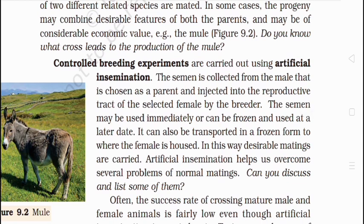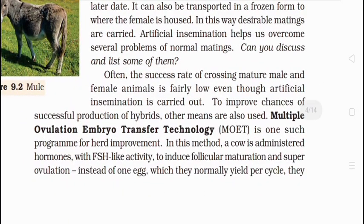Artificial insemination involves collecting semen from the male chosen as a parent and injecting it into the reproductive tract of the female by the breeder. The semen may be used immediately or can be frozen for later use. Even though artificial insemination is carried out to improve chances, the success rate of crossing mature male and female animals is sometimes low, so other methods are also used.